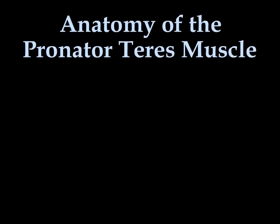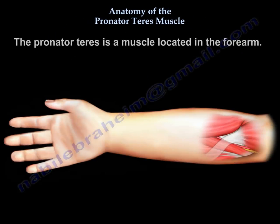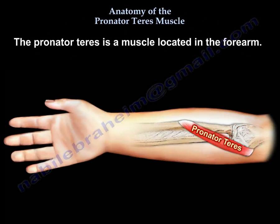Anatomy of the pronator teres muscle. The pronator teres is a muscle located in the forearm.